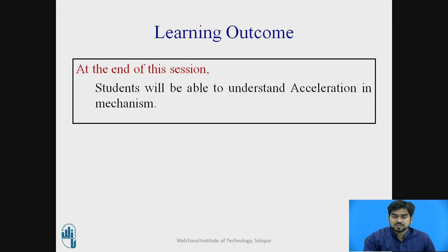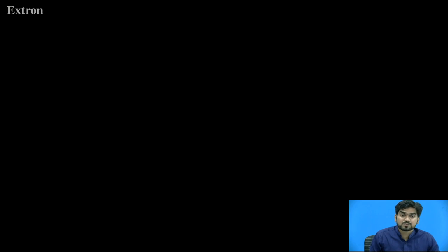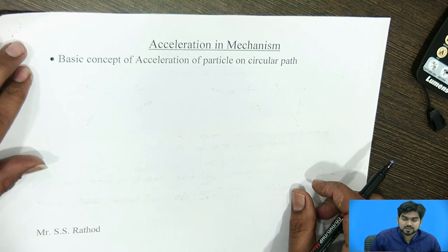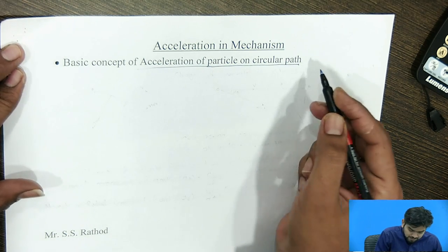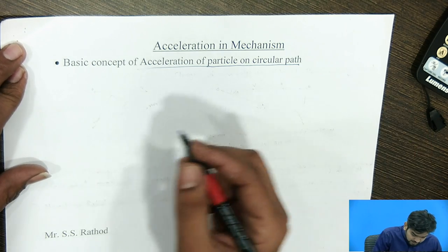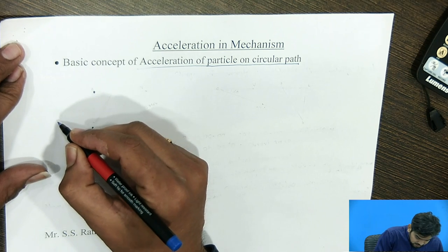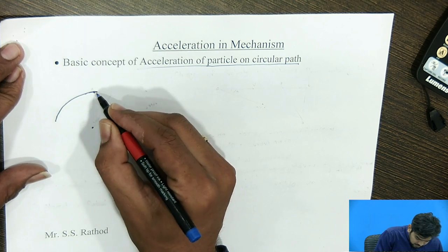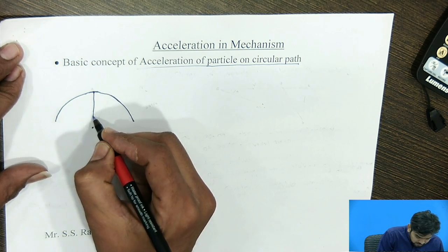Now we have to see what is the basic concept behind acceleration in mechanism for drawing the acceleration diagram. Suppose one particle is moving in a circular path. Suppose point A is there — the center point — and A is giving motion around this circular path. This gives us the radius OA.